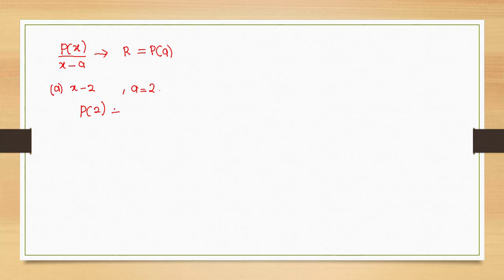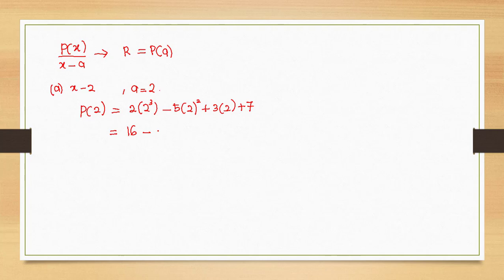P(2) is equal to 2 times 2³ minus 5 times 2² plus 3 times 2 plus 7. From here, 2 times 8 gives 16, minus 5 times 4 gives 20, plus 3 times 2 gives 6, plus 7. The final answer is 9. Therefore, the remainder is equal to 9.